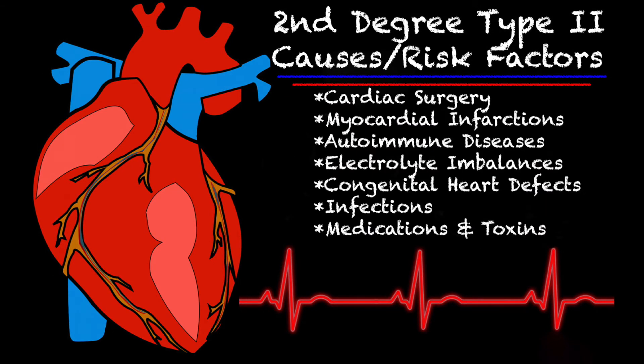I always like to go into the different causes and risk factors for whatever condition I'm going over. Some of them are repeats, but some are very specific to this type of heart block. Some of the causes and risk factors of a second degree type 2 or Mobitz 2 include recent cardiac surgery and an acute myocardial infarction — whether it's happening right now or one that happened in the past. A myocardial infarction and cardiac surgery can cause conduction abnormalities due to scar tissue or a current infarct of the heart.